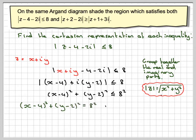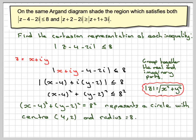If we draw (x - 4)² + (y - 2)² = 8², it will represent a circle, center (4, 2) and radius 8.